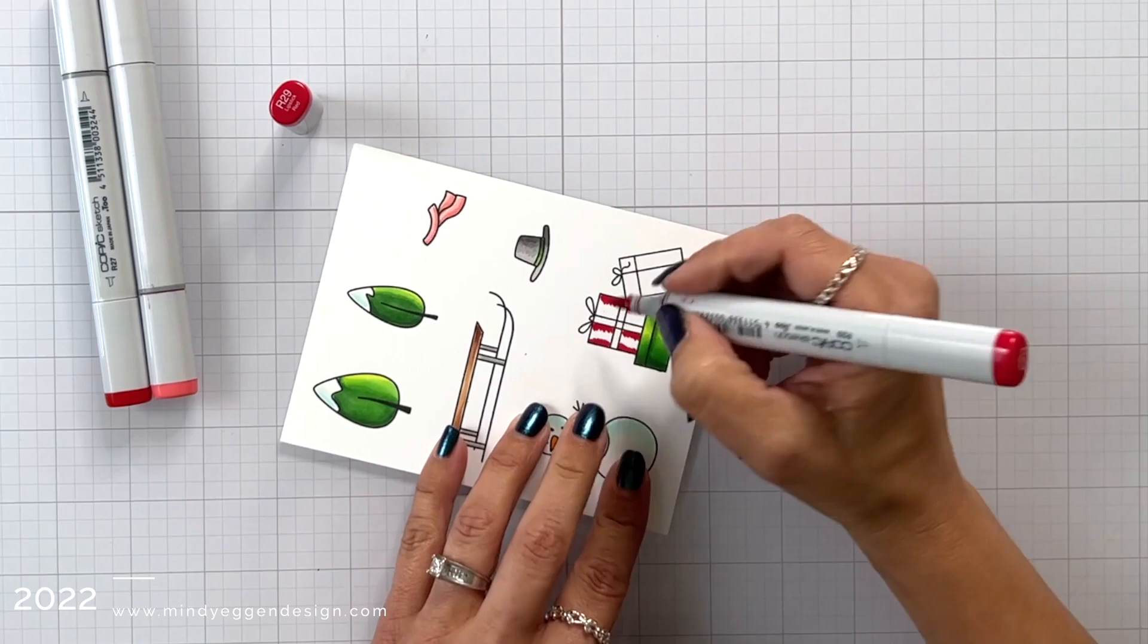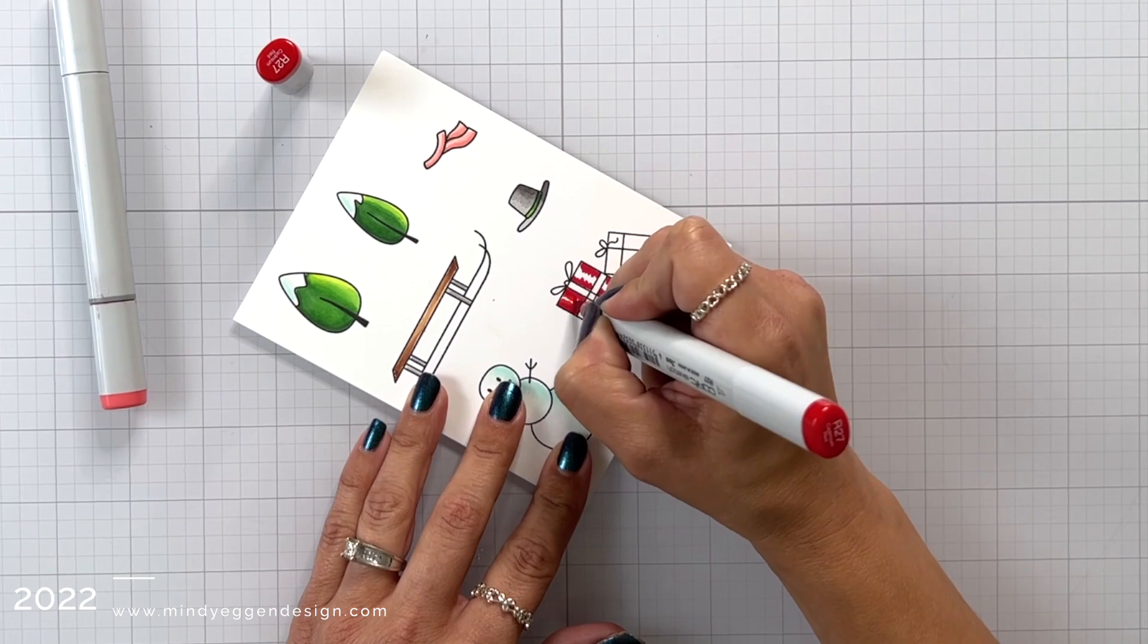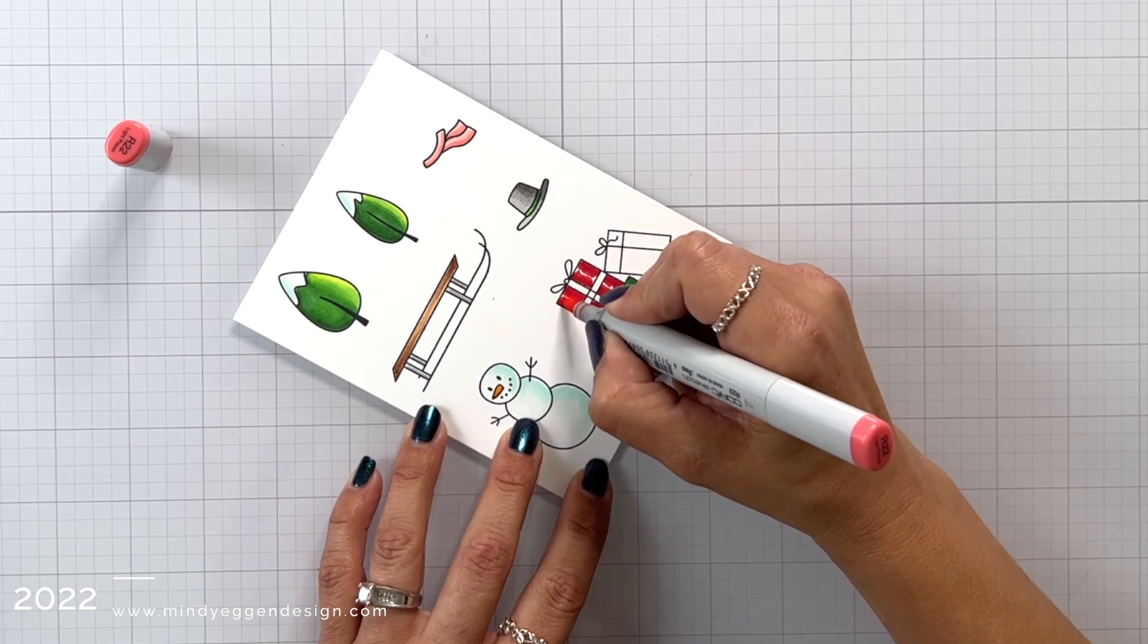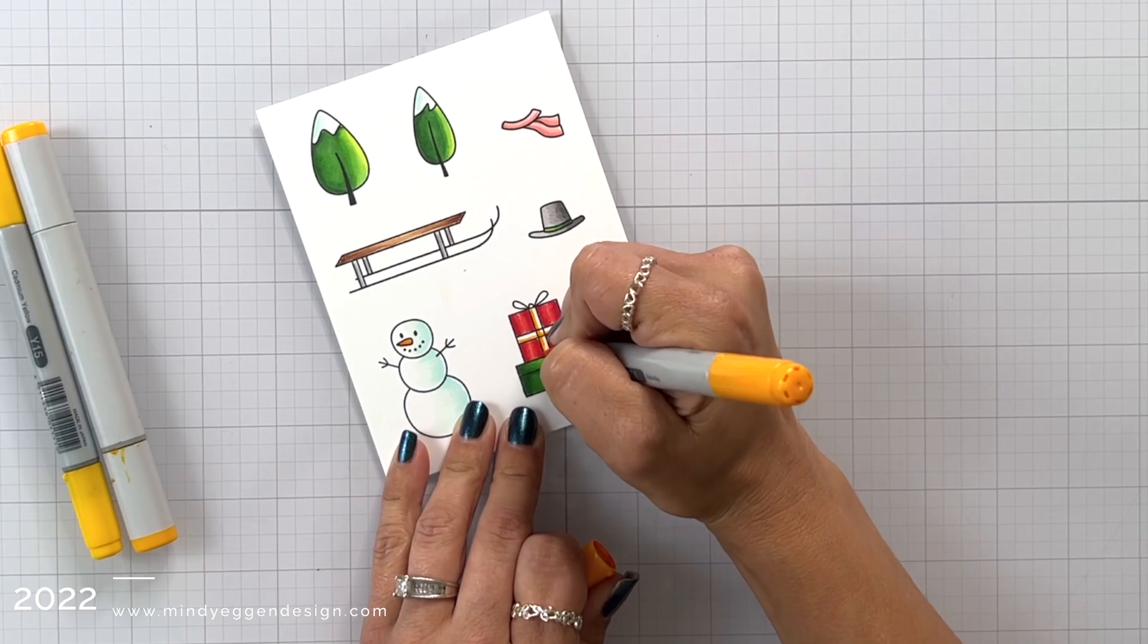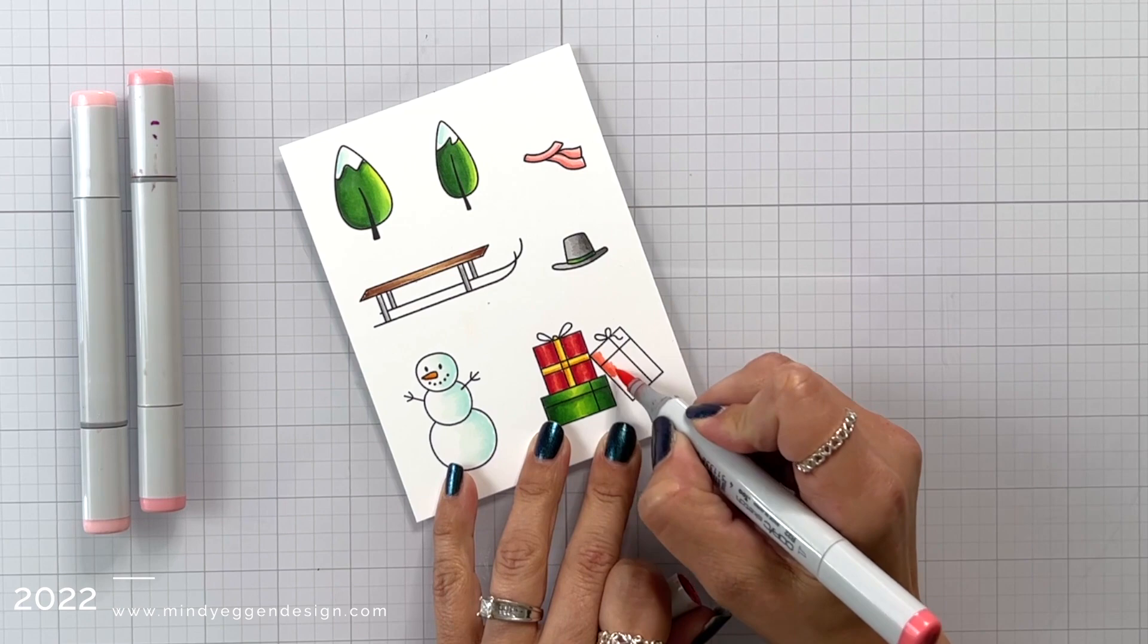Now for my present, I added the darkest color, the R29, to the sides of the present and then also on each side of the ribbon, mainly because I thought there'd be a shadow there. After I finished coloring, I didn't really care for how it looked, but once I was looking at the video and kind of stepped back from this a little bit, now I can see the shiny spots of the wrapping paper and now I'm happy with it. But sometimes we really need to just take a step back from our project.